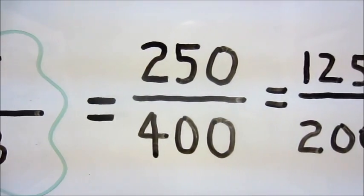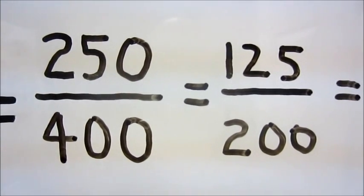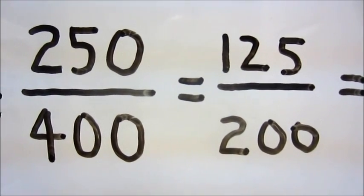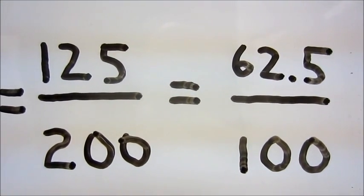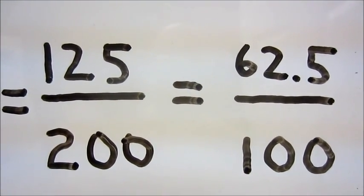So half of 250 is 125, half of 400 is 200. Half of 125 is 62.5, half of 200 is 100.